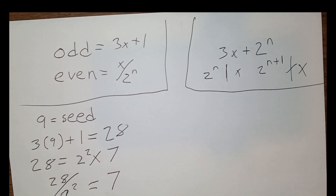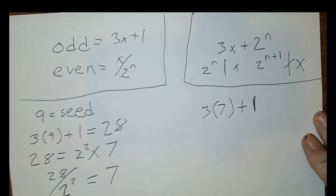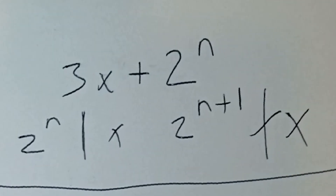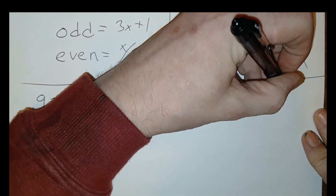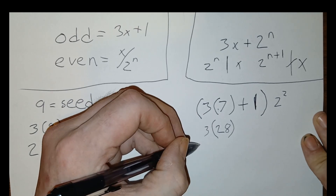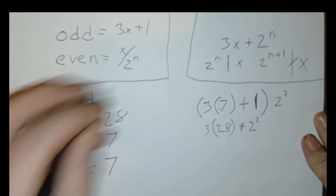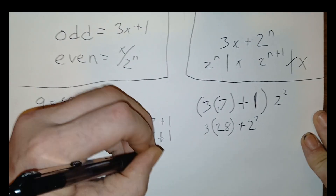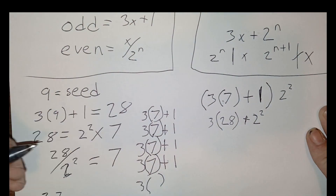Now, traditionally, we would multiply 7 by 3 and add 1 because it's odd. But instead, we're going to define a new function that combines both rules. The new function is 3x plus 2 to the n, where 2 to the n is the largest power of 2 that divides x. What we want to do is factor the 2² back into the number 7. Traditionally, when we reduced the number to its odd form, we would add 1 to send it to its next successor. But what we've essentially done is made 4 separate copies of that odd number, so instead of adding 1, we have to add 4 — the largest power of 2 that divided 28.